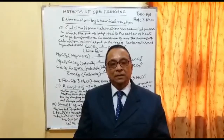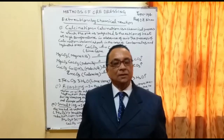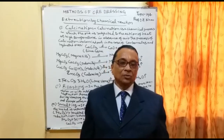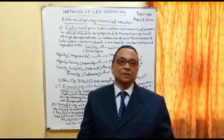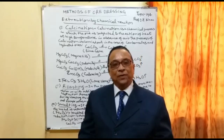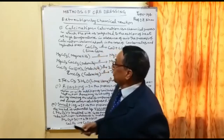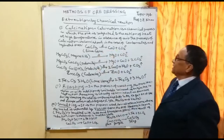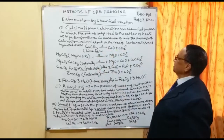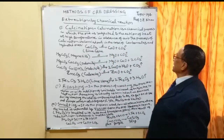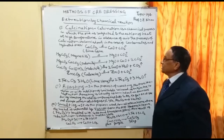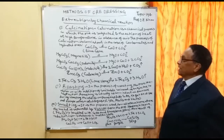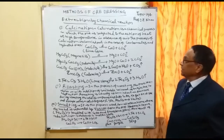In ore dressing, I am now going to discuss some chemical reactions and how they are involved in the extraction of metals to purify them from gangue and impurities. The first is calcination. Calcination is a chemical process in which the ore is subjected to the action of heat at high temperature in the absence of air.